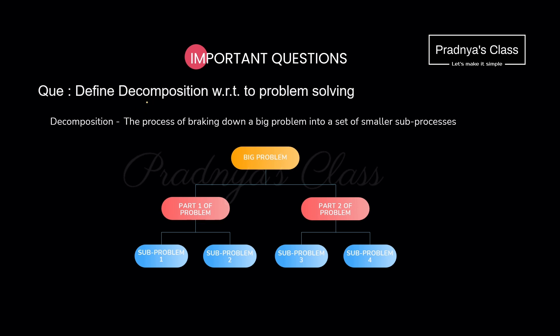Alright, let's move ahead. We have one question based on problem solving — we need to define decomposition. Based on this chapter, you may get a question for 2 marks, 3 marks, or even 4 marks, in which you may need to draw the flowchart, write the algorithm, or even write the pseudo code. This particular question will be asked for 2 marks. So you will be writing the definition of decomposition and drawing the diagram. Let's try to understand what decomposition is.